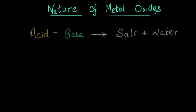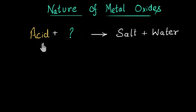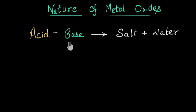You would recall that when an acid and a base react, they neutralize each other's effect and finally form a salt and water. So if you have some random chemical that is reacting with an acid and forming a salt and water, then you can be sure that this chemical has to be a base, because only a base can react with an acid to form salt and water.